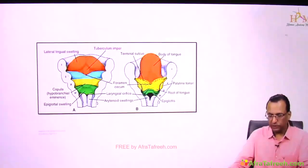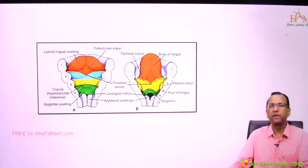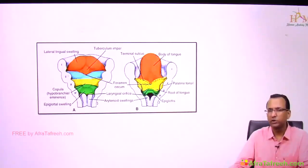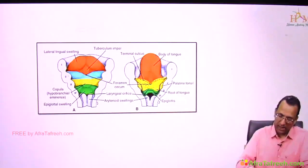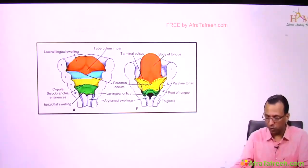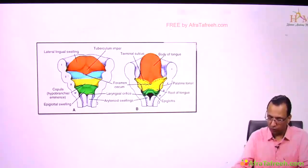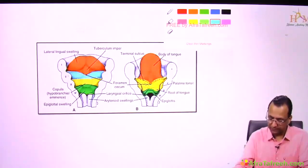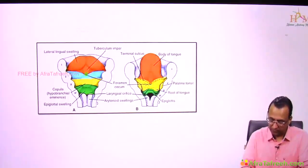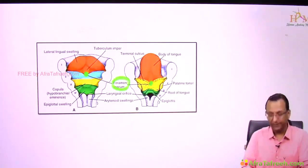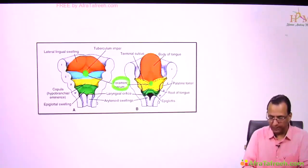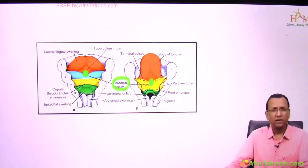The second arch is shown in blue color and it will disappear from the tongue. It has minimal contribution to the tongue. As the second arch is disappearing from the tongue, it will disappear at what is called the foramen cecum. The second arch will disappear at the foramen cecum and does not contribute to the tongue at a greater level.